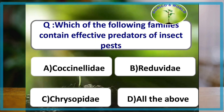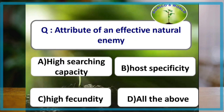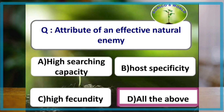Which of the following families contain effective predators of insect pests? Coccinellidae, Reduviidae, and Chrysopidae — all three families contain effective predators. An effective natural enemy should have high searching capacity, host specificity, and high fecundity.